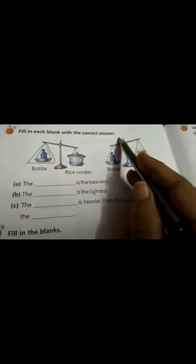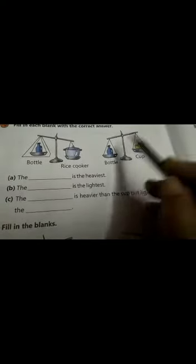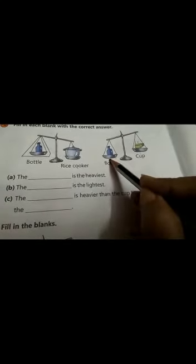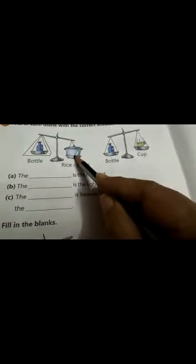Look this. Fill in the blanks with the correct answer. Now in one beam balance, they have given a bottle and a rice cooker. Which is heavier? The rice cooker. And in the next one, the same bottle and a cup is given. In that, the bottle is heavier. But now looking at all the figures, can we find out that the rice cooker is the heaviest? Then the bottle and lastly the cup. So we write it down. Dash is the heaviest. What is the heaviest? Yes. The rice cooker.